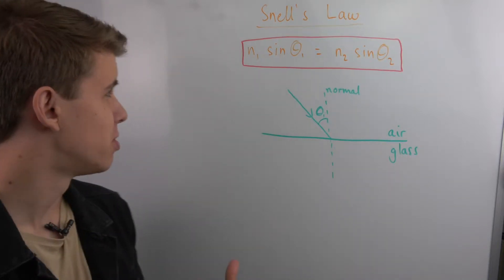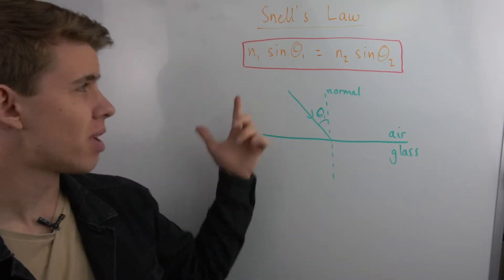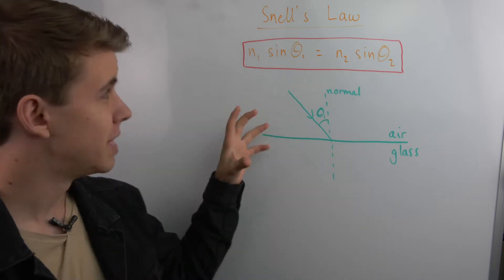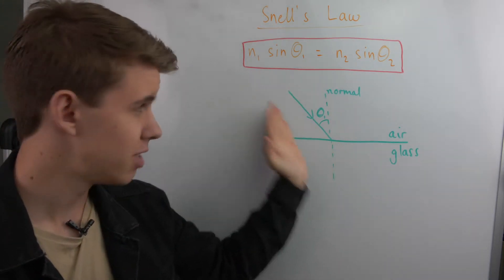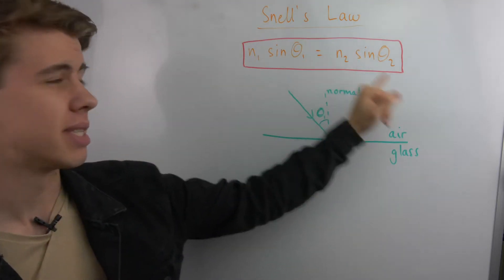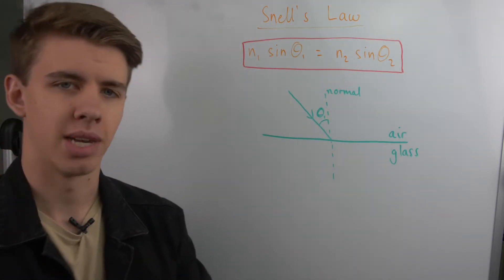Snell's law is the law that says the refractive index of one medium multiplied by sine of the angle that light takes entering that medium is equal to the same for your second medium and your second angle.